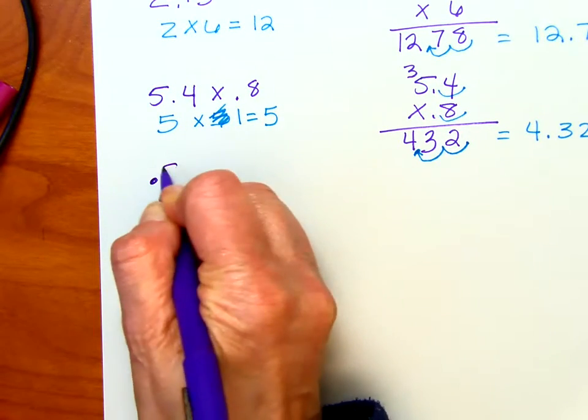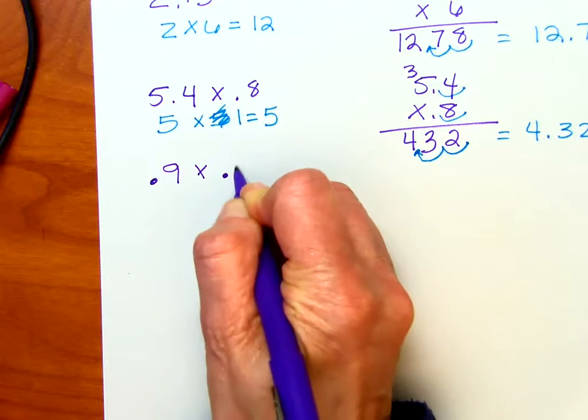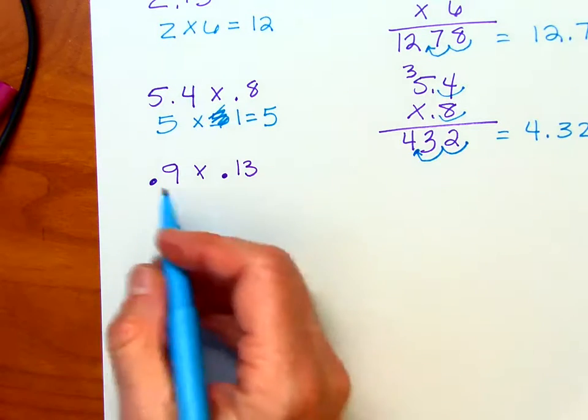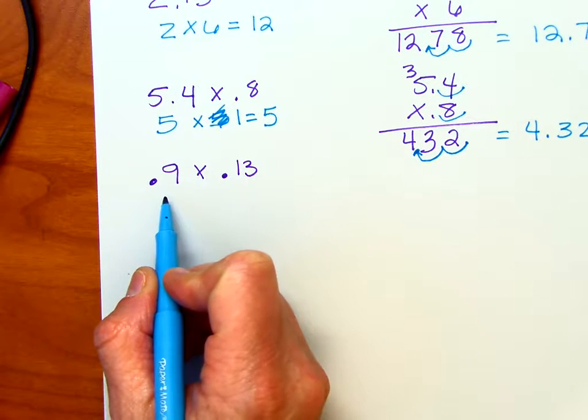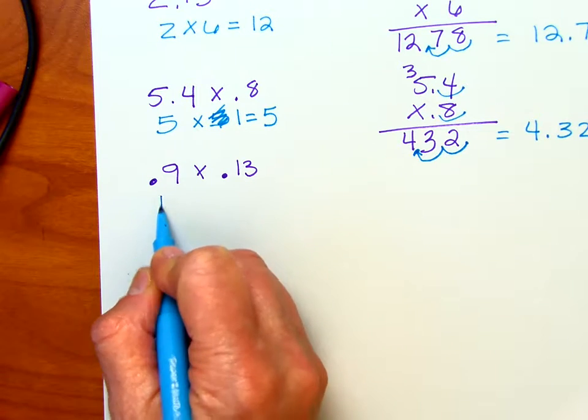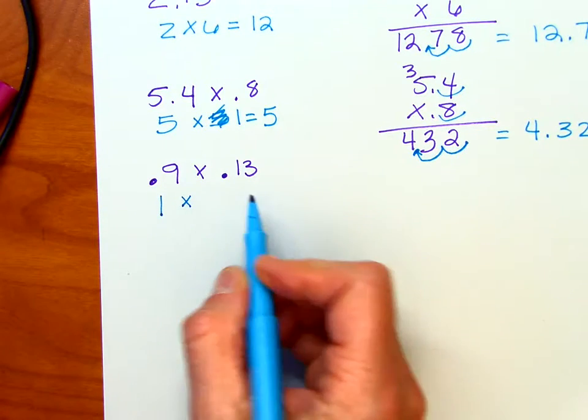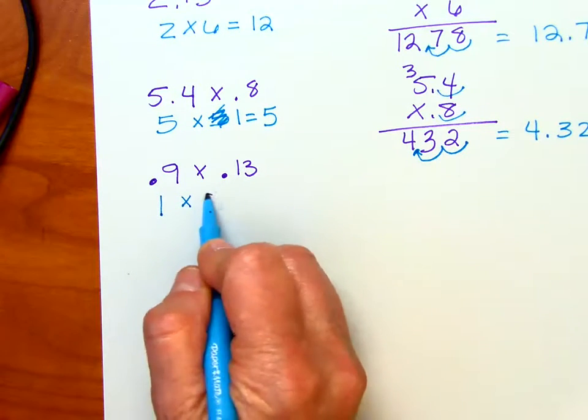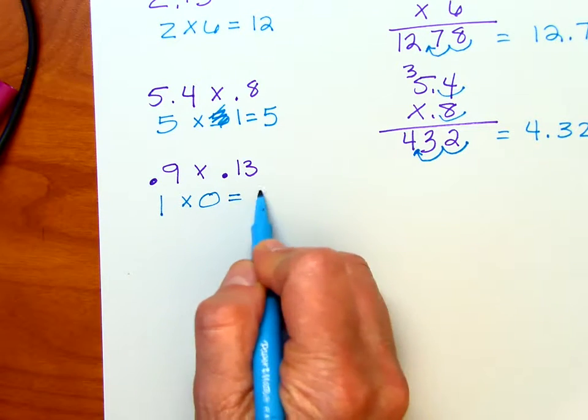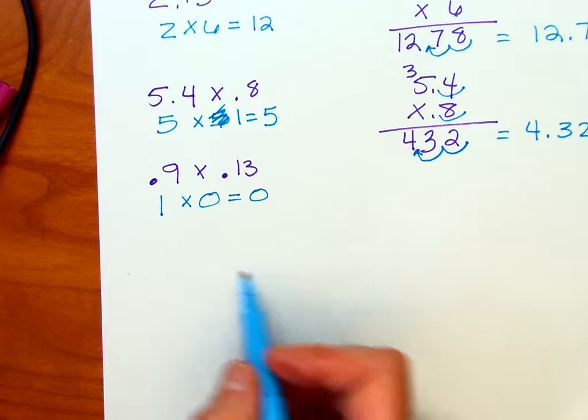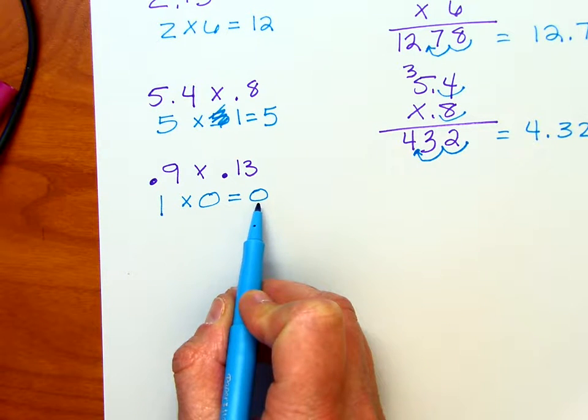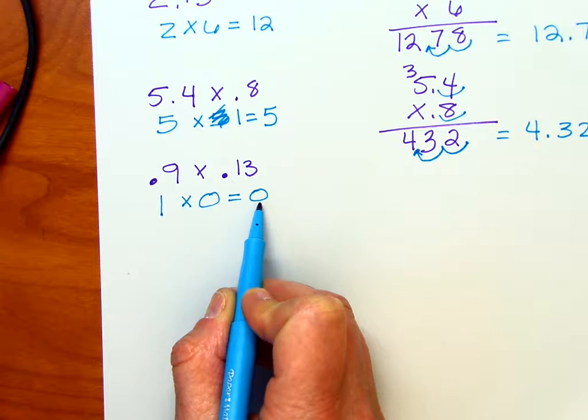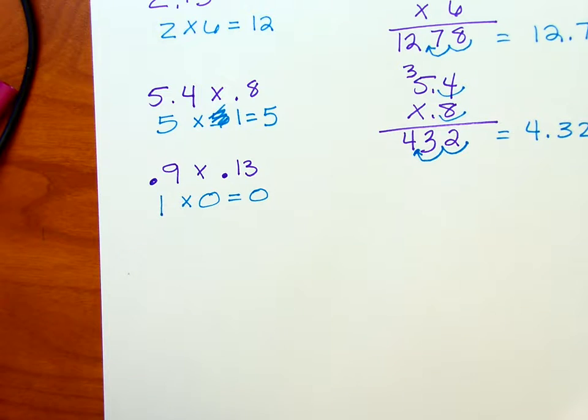Let's go ahead and do one more. We've got 0.9 times 0.13. Now if we do some rounding and estimating, if I round to the nearest whole number in this one I would get a 1. But if we round to the nearest whole number it looks like it's closer to 0 than it is 1. And 1 times 0 is going to give me 0. Now I'm pretty sure my answer is not going to be 0. So I imagine it's going to be slightly bigger than 0.